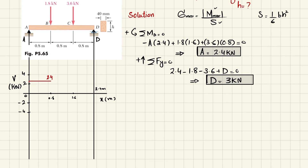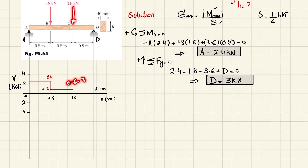At point B, a downward load of 1.8 kN acts: 2.4 − 1.8 = 0.6 kN. Shear drops to 0.6 and remains constant to point C. At C, a load of 3.6 kN acts: 0.6 − 3.6 = −3.0 kN. Shear drops to −3 and remains constant to D, where the +3 kN reaction brings it back to zero. That completes the shear force diagram.